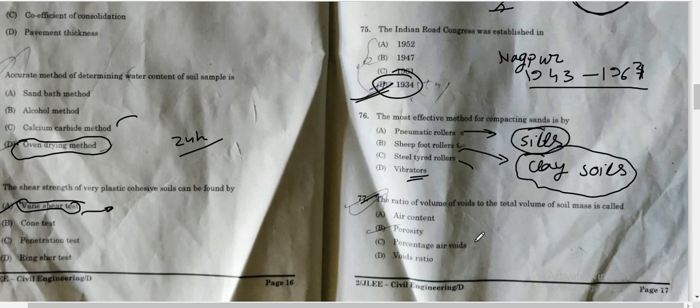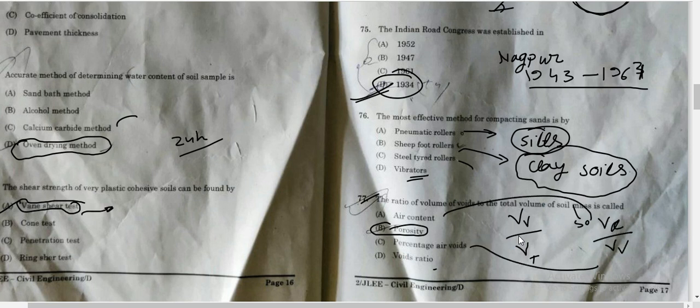Question number 77: the ratio of the volume of voids to the total volume of soil mass. That means volume of voids divided by total volume of the soil, V by V total. Whenever V total is coming in denominator, then the option will be porosity. If it's volume of voids divided by volume of solid mass, then the option will be void ratio. Air content formula is volume of air divided by volume of voids. Percentage of air voids is volume of air divided by V total.